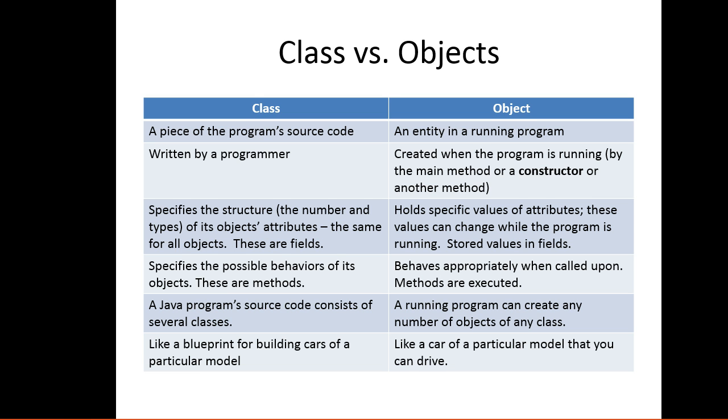A class is like a blueprint for building cars of a particular model. The object is the car that would be created based on that blueprint. If we distill this down, a class is like a blueprint where an object is what's created based on that blueprint. One class can produce an infinite number of objects.